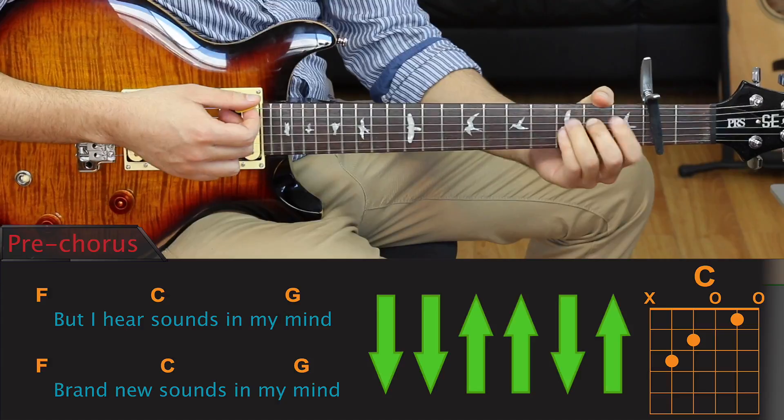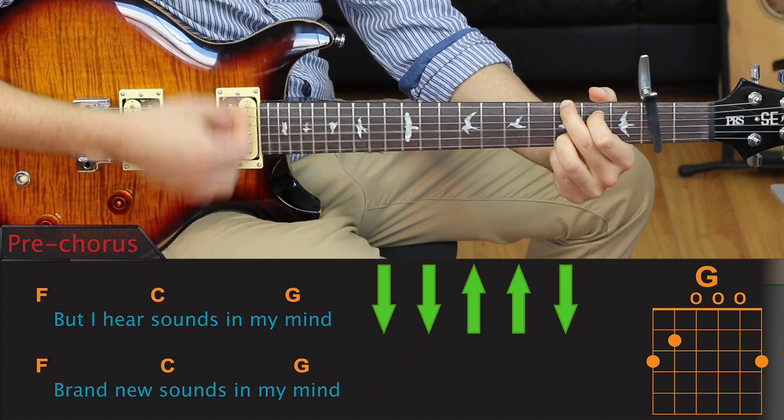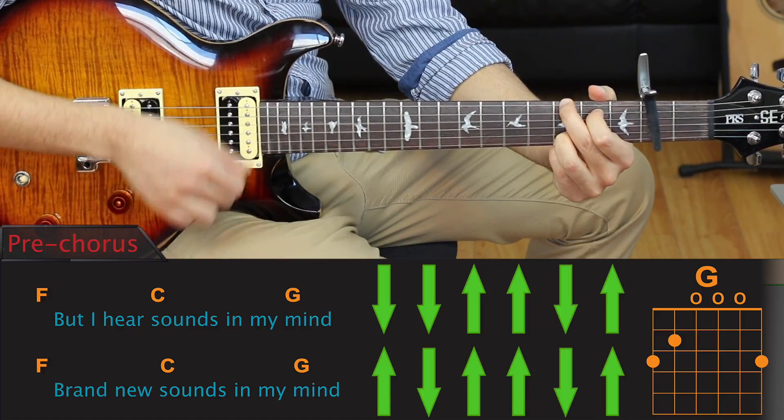Next we have the G chord, which will be strumming like this: down, down, up, up, down, up, up, down, up, up, down, up.